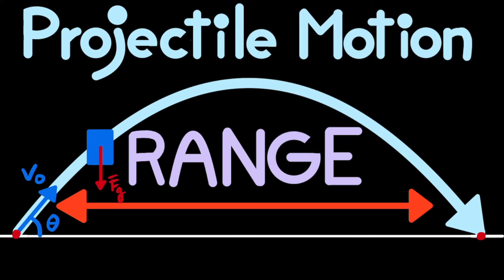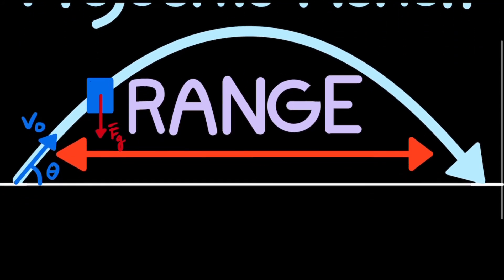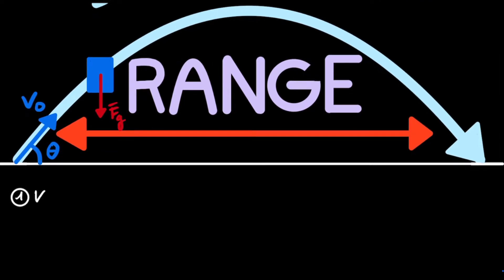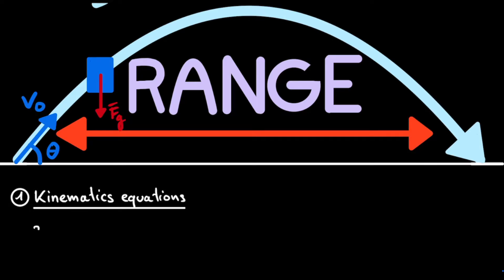Similarly, the only thing you really need to know by heart is the kinematics equation. Our starting point will be the kinematics equation, which is basically an equation that tells you the trajectory of a point given its initial position, velocity, and a constant acceleration. The position x at some point t is equal to its initial position x₀ plus its initial velocity times t, plus one half times the acceleration times t squared.